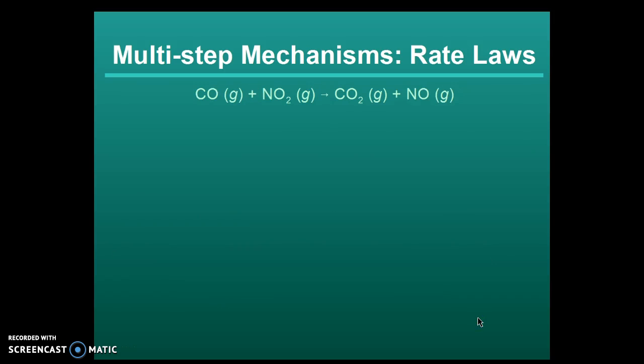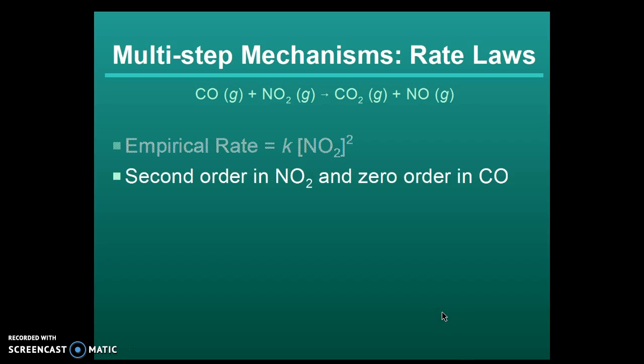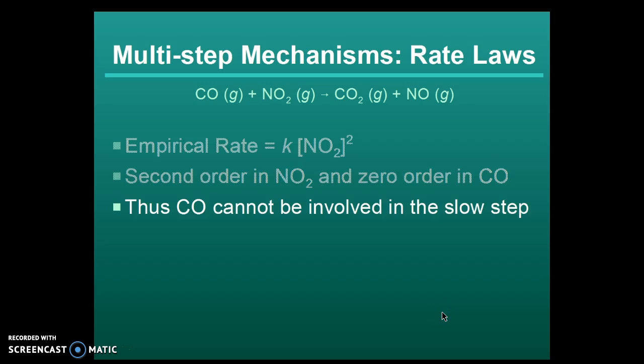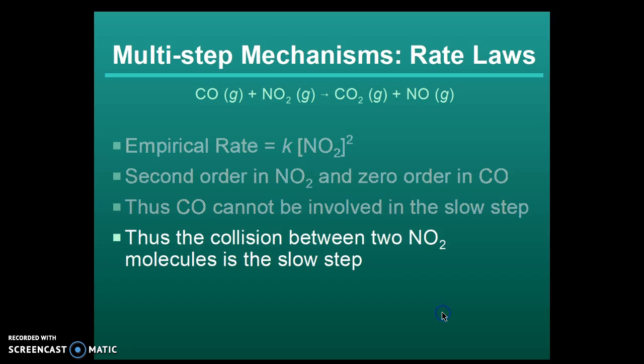Let's look at this reaction, carbon monoxide and nitrogen dioxide. Empirically we know that it is second order in NO2 and zero order in carbon monoxide. So carbon monoxide cannot be involved in the slow step. Thus the collision between two NO2 molecules must be the slow step. That's how we came up with the mechanism we showed you a few slides ago.